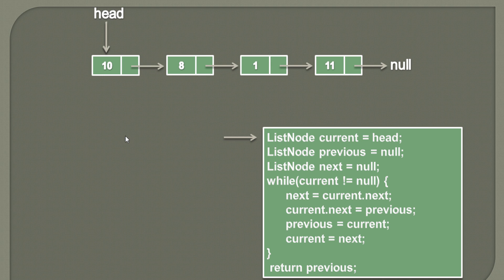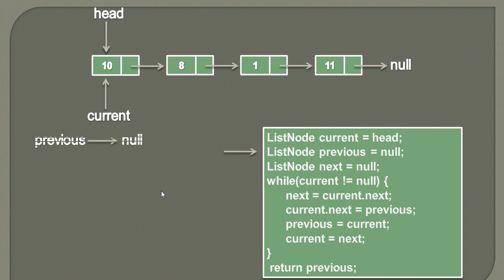The first step is to create a list node named current and assign the value of head to it. Since head points to the first node, current will also point to the first node, which is 10. Then we'll create one more node named previous, which will point to null. And we'll also create a node named next and assign a null value to it.